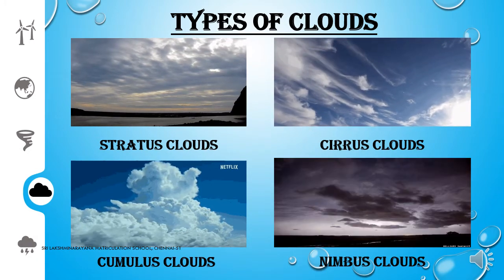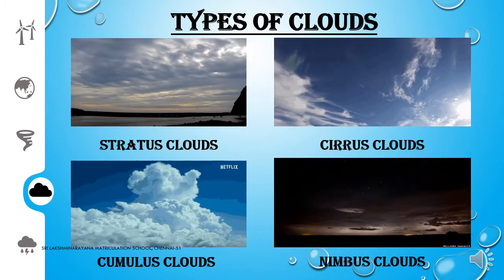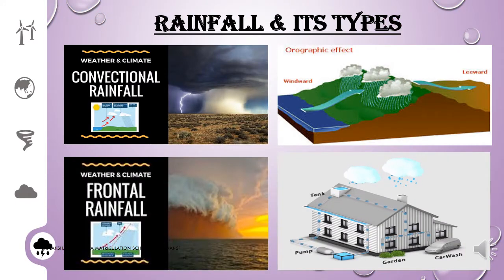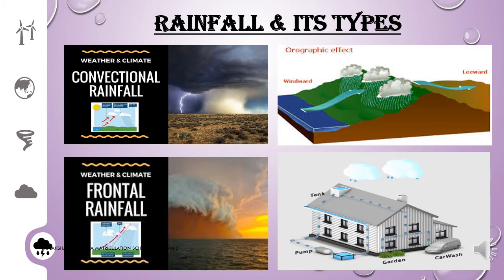Nimbus cloud is also called vertical or rain clouds. Condensation of water vapor causes rainfall. There are three types of rainfall, namely convectional rainfall, orographic rainfall, and cyclonic rainfall.